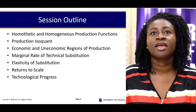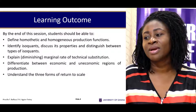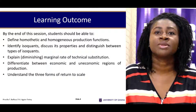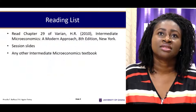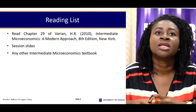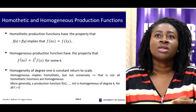By the end of the section you should have a good working knowledge of homothetic and homogeneous production functions, be able to identify an isoquant, determine optimum bundles of production, explain the law of diminution, marginal rates of substitution, and more. The reading list includes Chapter 29 of Varian and Hollaright, session slides, and any other intermediate microeconomics textbook.